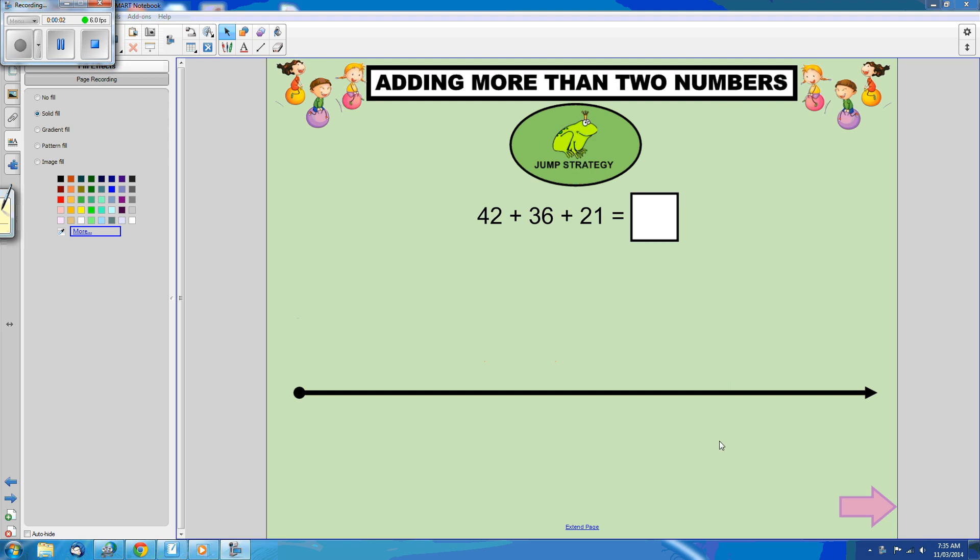Let's use this number line to demonstrate the jump strategy for adding these three numbers together: 42 plus 36 plus 21.